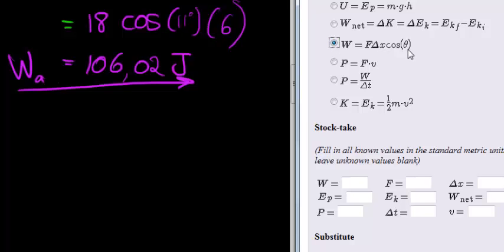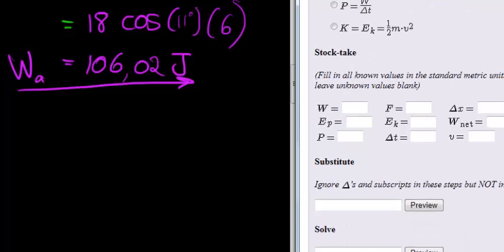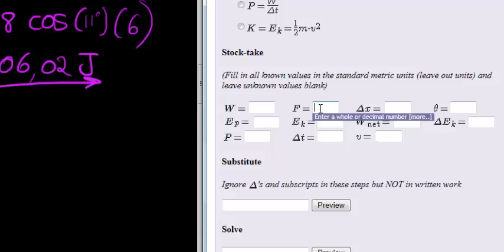We know this is the correct formula to calculate work, not very difficult. So the force applied is 18, the distance travelled is 6, the angle between the force and the distance is 11 degrees.